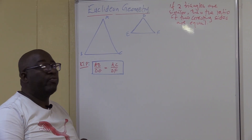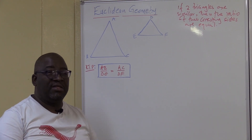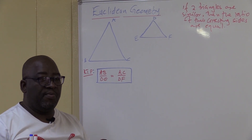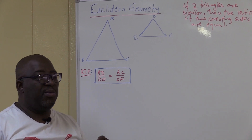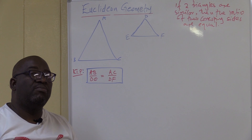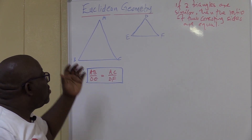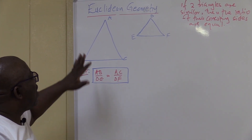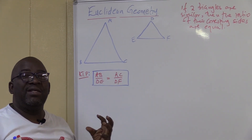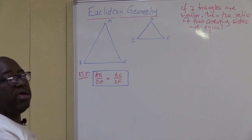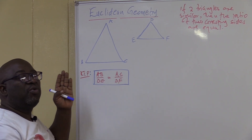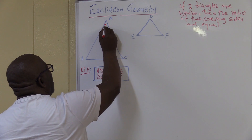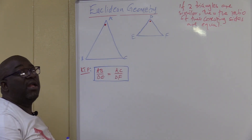If two triangles are similar, then the ratio of their corresponding sides are the same. What do we mean by similar triangles? Similar triangles are triangles that are equi-angular. What do we mean by equi-angular? It simply means that the corresponding angles are the same. Note that corresponding here has nothing to do with parallel lines — I'm talking about triangles. It has everything to do with position. If you compare two triangles, look at angles that occupy the same position. Angle A in the first triangle corresponds with angle D in the second triangle.